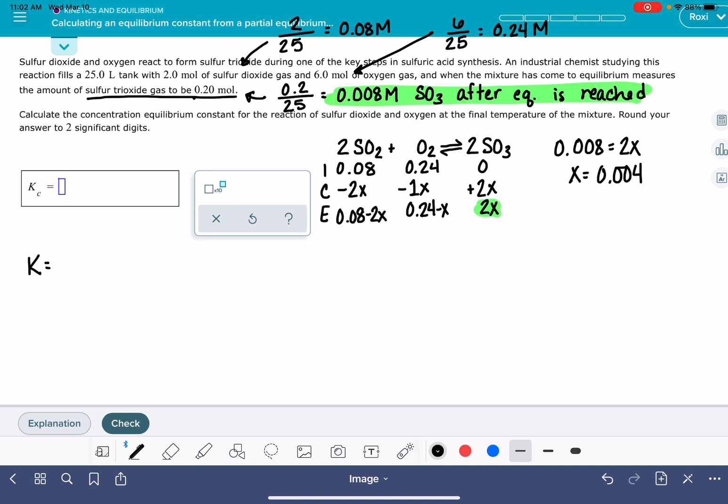And then we can plug this x value in to the other terms in this equation. So we can say for the SO2, we have our equilibrium expression here is 0.08 minus 2x, which is 0.004, and that is going to be 0.08 minus 2 times 0.004, 0.072 molar.